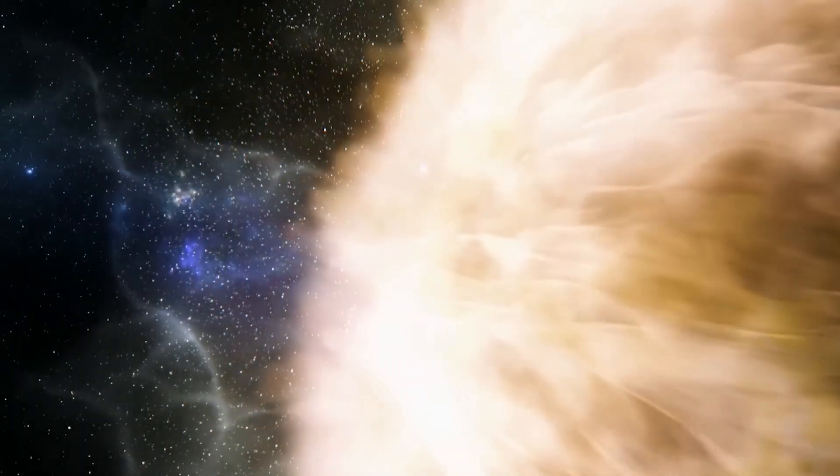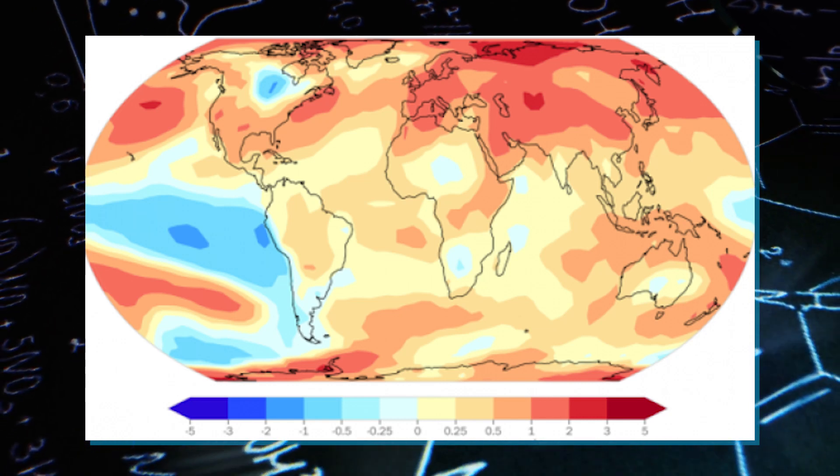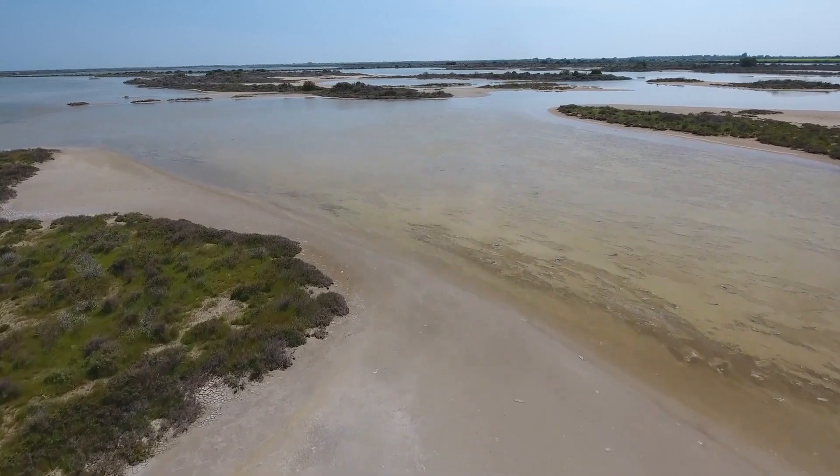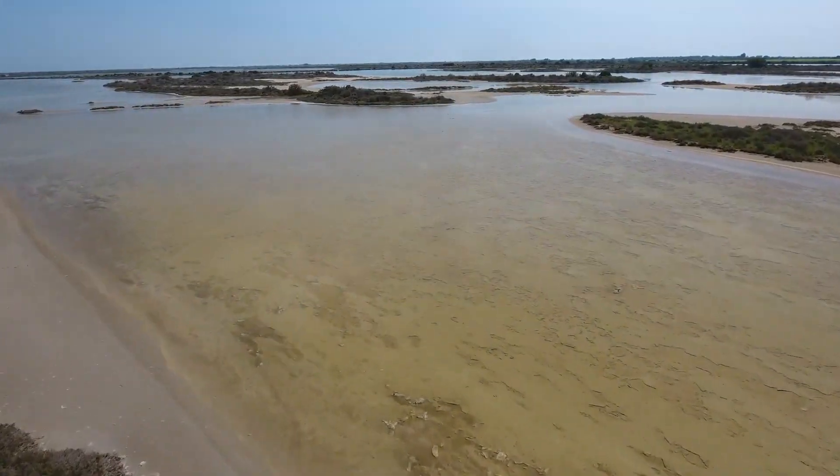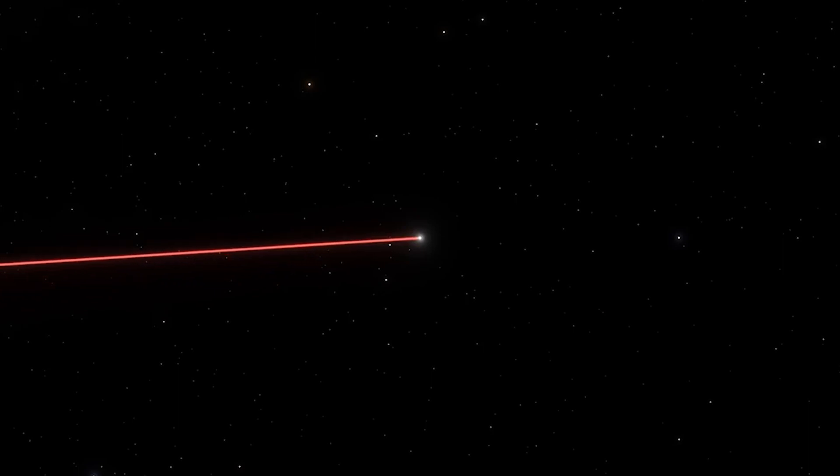Moreover, an increase in intergalactic cosmic radiation might affect Earth's atmosphere, including the ozone layer. These atmospheric changes could further influence climate patterns and have implications for various species' survival. As climates and ecosystems transform, habitats for numerous species might become less suitable or shift entirely.